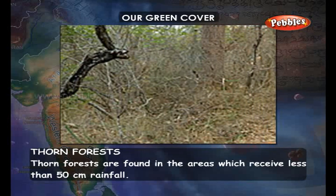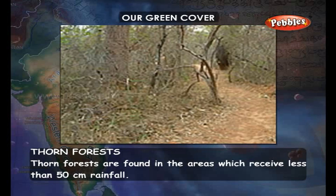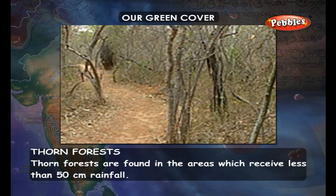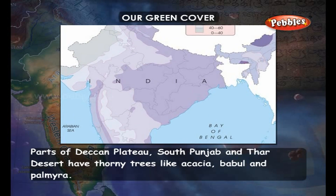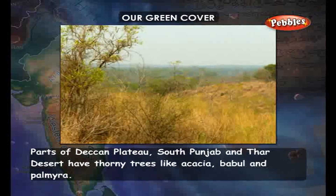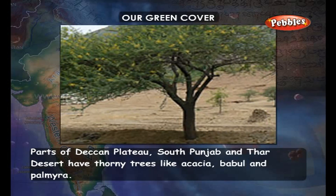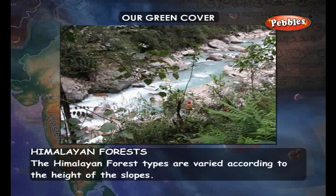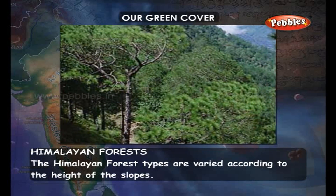Thorn forests are found in areas which receive less than 50 centimeters of rainfall. Parts of the Deccan Plateau, south Punjab, and the Thar Desert have thorny trees like acacia, babul, and palmyra.